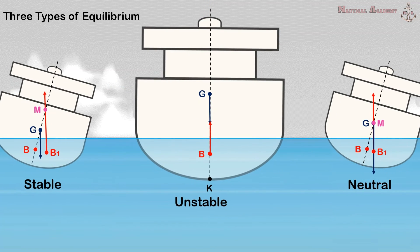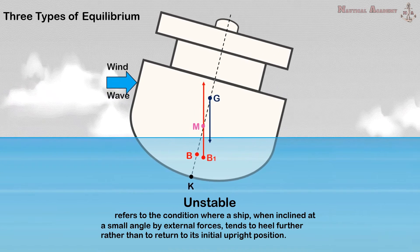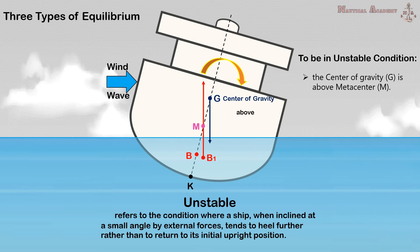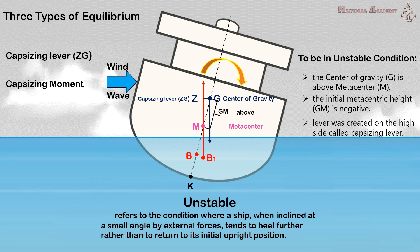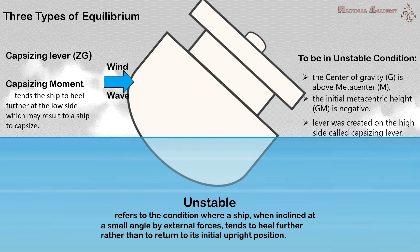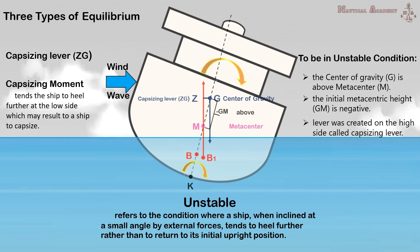Next is the unstable equilibrium. Unstable equilibrium refers to the condition where a ship, when inclined at a small angle by external forces, tends to heel further rather than return to its initial upright position. For this to occur, the center of gravity is above the metacenter. In this case, the initial transverse metacentric height GM is negative. An arm or lever is created on the high side of the ship, but instead of a righting lever, a capsizing lever is created. The forces acting on the ship create a capsizing moment, formed by the buoyancy force acting at the center of buoyancy and the weight of the ship acting at the center of gravity, which tends the ship to heel further to the low side and may result in capsizing.